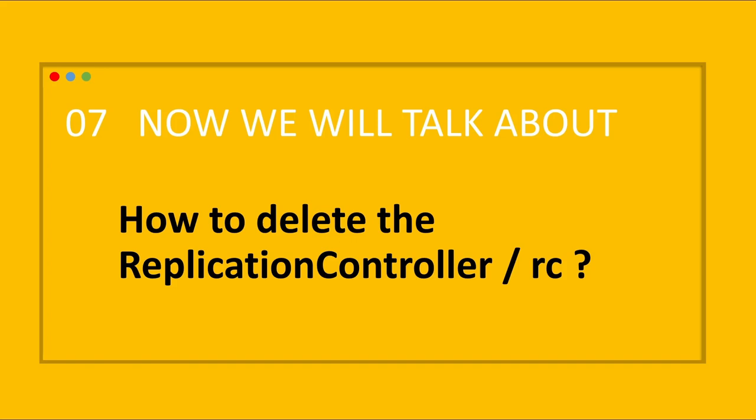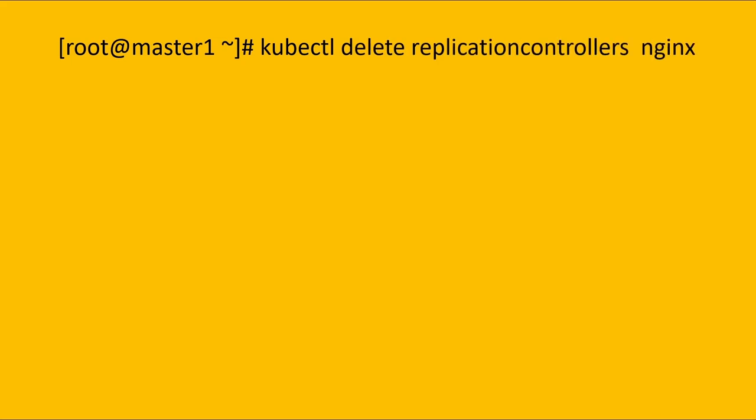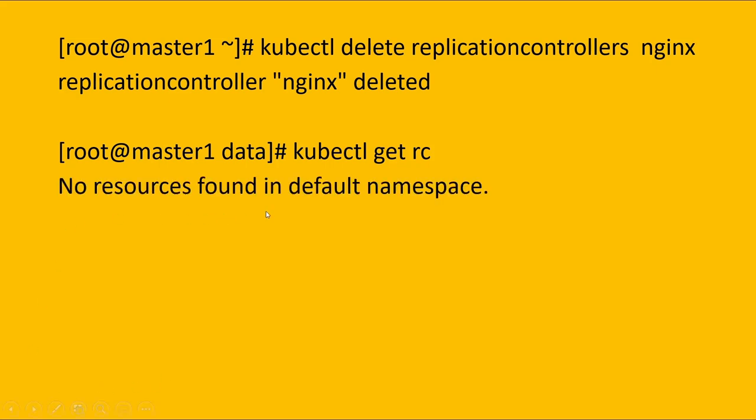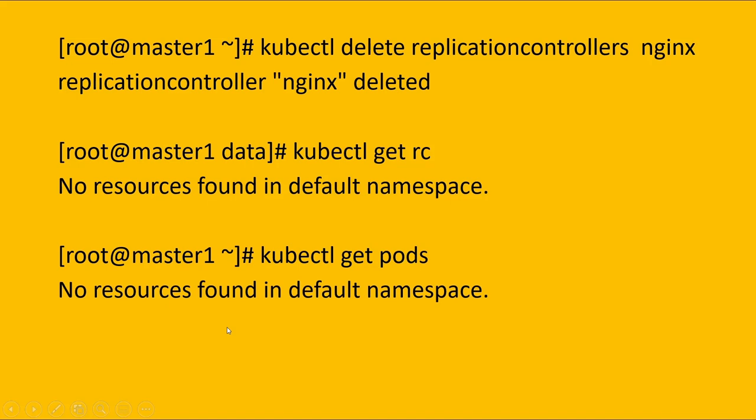Our next topic is how to delete the replication controller. kubectl delete replication controller followed by the replication controller's name. kubectl will scale the replication controller to zero and wait for it to delete the pods, then delete the replication controller. After deletion, you can execute kubectl get RC and you will observe no resource found in the default namespace. And if you execute kubectl get pods, you will not observe any pod related to your RC.